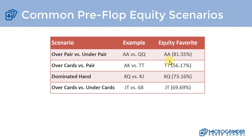If there are already raises and blinds in the pot, it could dictate a call because the extra money might make it slightly profitable or close to profitable in the long run. Dominated hands are also important — there's a reason why we raise, call, and three-bet certain ranges. A dominated hand is where our kicker is dominated: if both players have a king, but one has a queen kicker and the other a jack kicker, king-queen dominates king-jack.